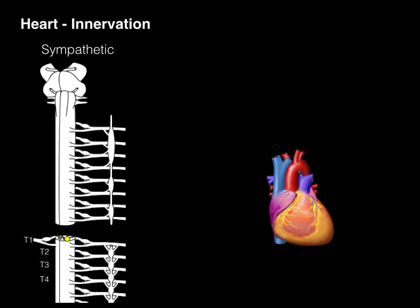The preganglionic sympathetic neuron arises in the lateral horn gray matter, sends its axon out the ventral root, ventral ramus, into the white ramus communicans, where it synapses with a postganglionic sympathetic neuron within the sympathetic chain. The postganglionic sympathetic neuron then goes right out of that chain ganglion directly to the cardiac plexus and to the heart to innervate it. The same thing happens at each of these levels from T1 to T4.